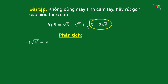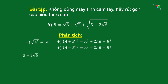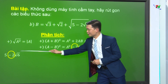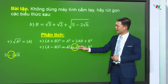Vấn đề là làm thế nào để đưa 5 - 2√6 về dạng A². Muốn đưa về dạng A² thì nhớ đến 2 hằng đẳng thức bình phương của một tổng và bình phương của một hiệu. Chúng ta quan sát 5 - 2√6: số âm 2 xuất hiện - trong 2 hằng đẳng thức thì chỉ có hằng đẳng thức bình phương của một hiệu có số âm 2. Vậy số âm 2 ở đây quyết định chúng ta dùng hằng đẳng thức bình phương của một hiệu.